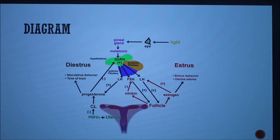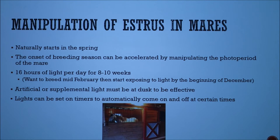This diagram shows exactly how light affects the eye, then the brain and the pineal gland, and melatonin production. It also breaks down all of the different hormones that are involved in estrus and diestrus.